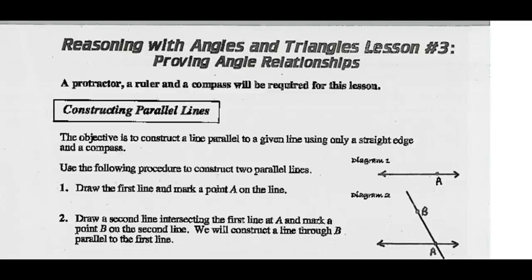Hey, Math 20-2s. Today we're going to look at proving angle relationships. First, we're going to construct some parallel lines. You are going to need a protractor, a ruler, and a compass.